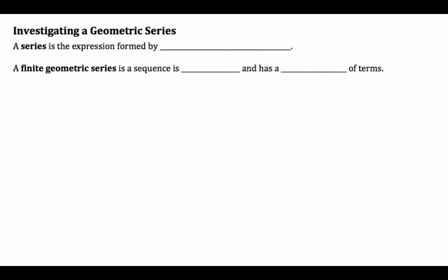Let's start by defining what a series is. It is an expression formed by adding the terms of sequence. And the finite geometric series is a sequence that is geometric and has a finite number of terms.